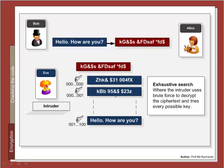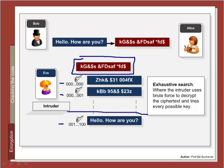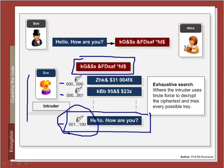Another typical method is where Eve does an exhaustive search. She has managed to get the ciphertext and then tries each of the keys within the keyspace until she ends up with something that looks like a message. Through exhaustive searching, she eventually finds the message. The more keys there are, the longer this will take.